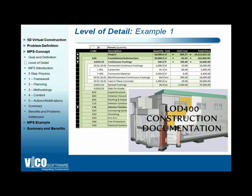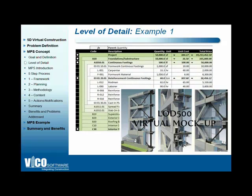We can go further into LOD 400, which is the construction documentation level of detail — the highest pre-construction level. At this level, you may be able to add more detailed material takeoff or labor information to your estimate. LOD 500 would be a virtual mockup or as-built. Increasing detail increases line items and model elements, improving accuracy, but also increases the amount of work required if the design changes.